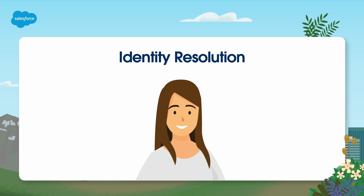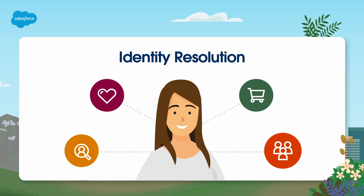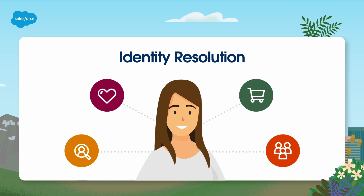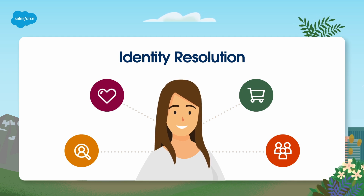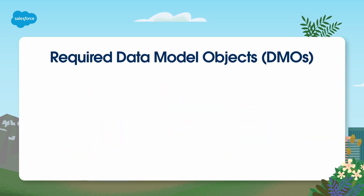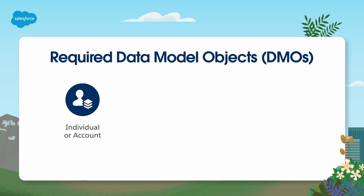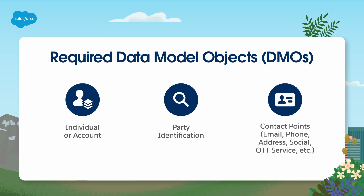It's important to keep in mind when setting up mapping: the primary goal of Data Cloud is identity resolution and creating a unified profile for each customer or account. Looking at the mapping canvas, it's easy to think all we're doing is labeling data for segmentation, but your mappings and relationships must be carefully considered. Data has to be mapped correctly in order for identity resolution to process and create a single, unified view of the customer or account. To drive value in harmonization, unification, and activation in Data Cloud, you must include the following data model objects in your data mapping: Individual or account, party identification, and contact points like email, phone, address, social, OTT service, etc.